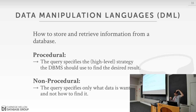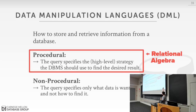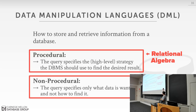Now that we understand the relational model, we need to actually get data in and out of it. There are two classes of query languages: procedural, where you define at a high level the actual steps to execute your query; and non-procedural, where you describe the answer you want and the system figures out how to compute it automatically. Relational algebra is the procedural approach; relational calculus is the non-procedural approach. We won't cover relational calculus — it's only needed if you're building a query optimizer from scratch or replacing SQL. We'll focus on relational algebra.